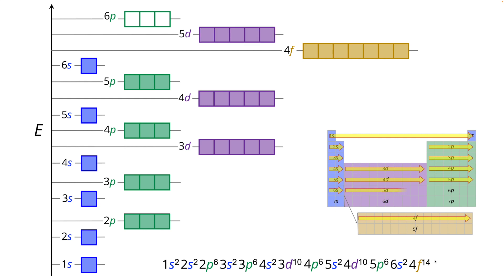Now we're into the 5d subshell back into the main part of the periodic table. 5d10 and then we complete the sixth row with 6p6.